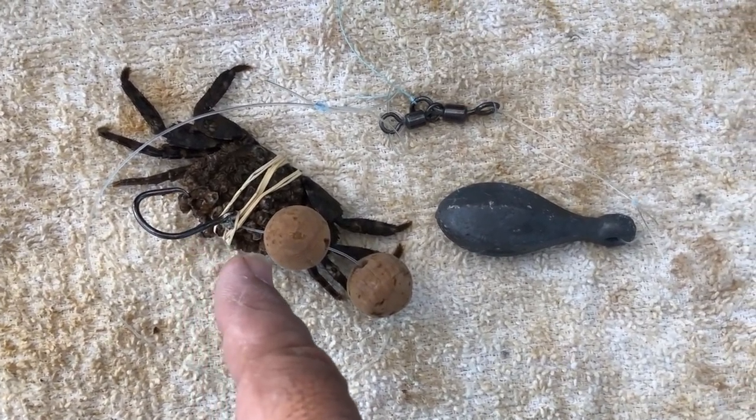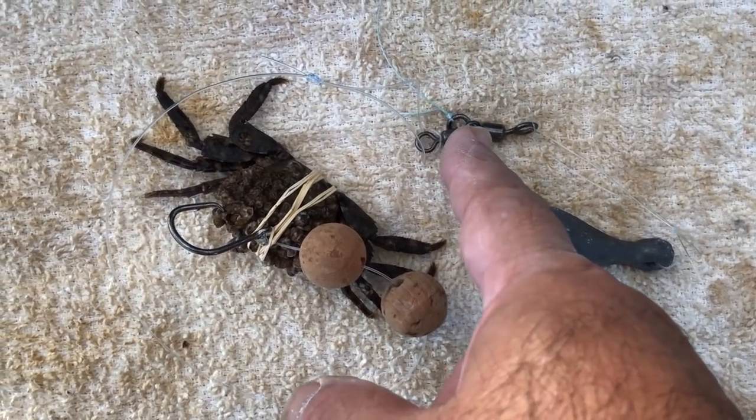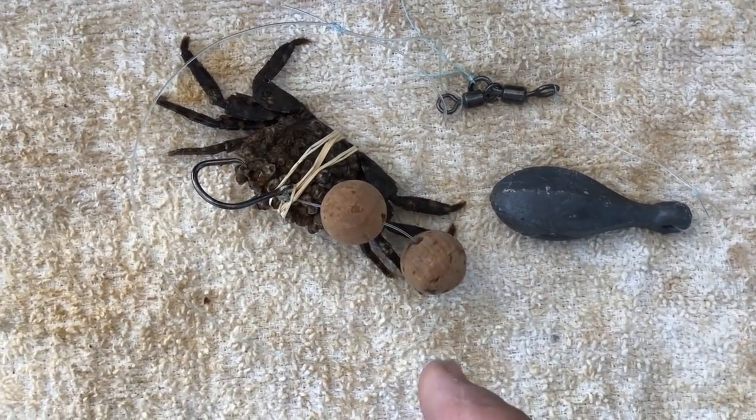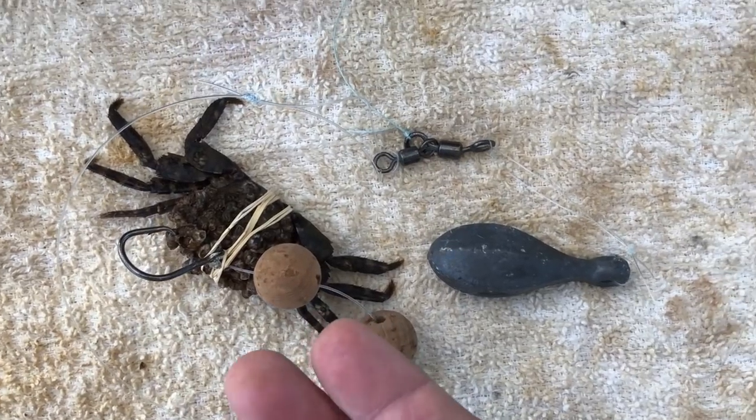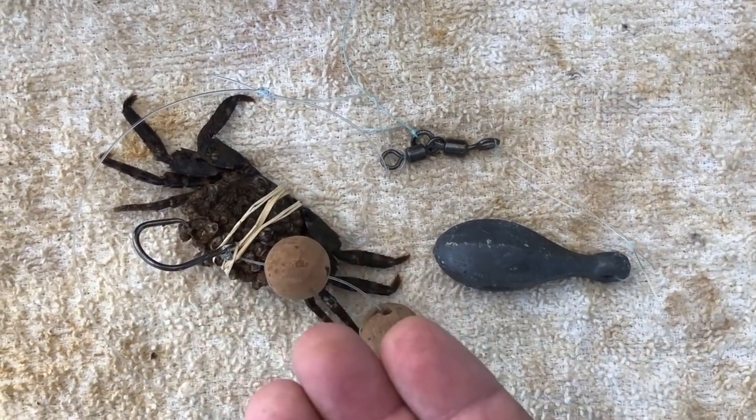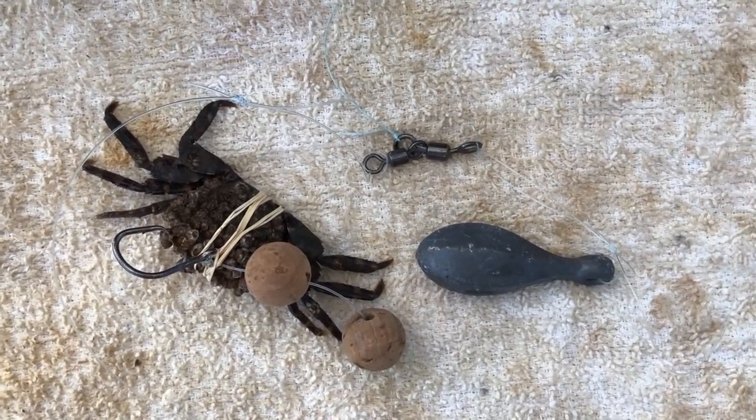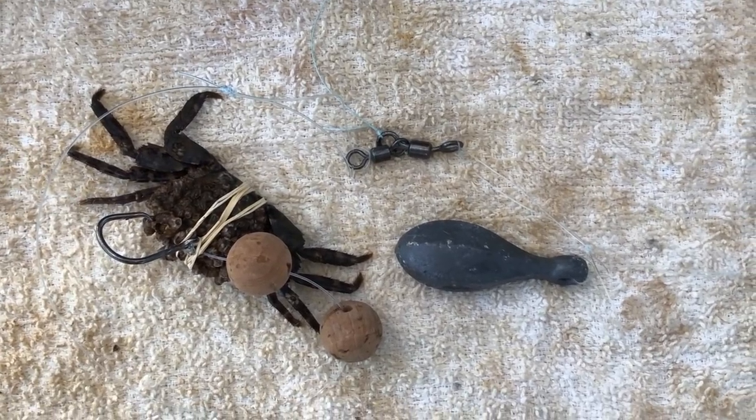Using a three-way swivel with a 3-ounce and a 2-ounce and a 4-ounce bank. So what I'm going to do is that the two foam balls here will bring the crab off the bottom and float it up towards the surface. So it's going to look very tantalizing for any trevally or any other predators that are in the area. So let's give this a try.